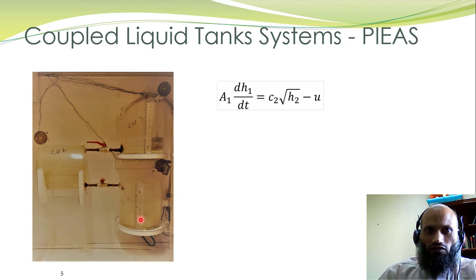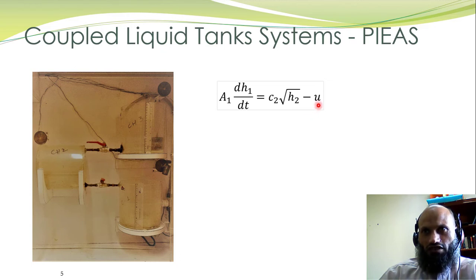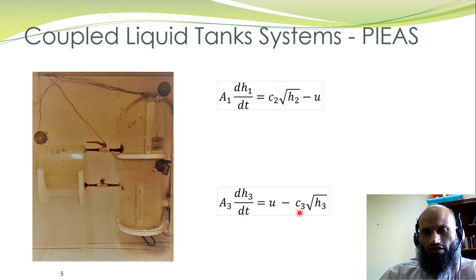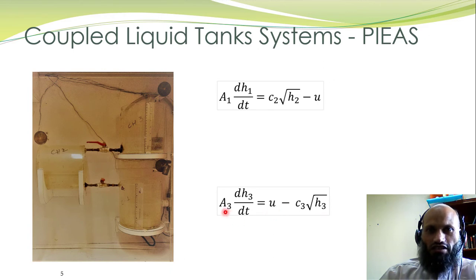For Tank 1, there is an inflow rate and an outflow rate; the outflow is due to the water pump which pumps water from Tank 1 into Tank 3. The outflow rate of the pump is u, so the differential equation for Tank 1 is: A_1 × dh_1/dt = c_2√h_2 − u. Similarly for Tank 3, the inflow is from the pump and the outflow rate is c_3 × √h_3, giving: A_3 × dh_3/dt = u − c_3√h_3.